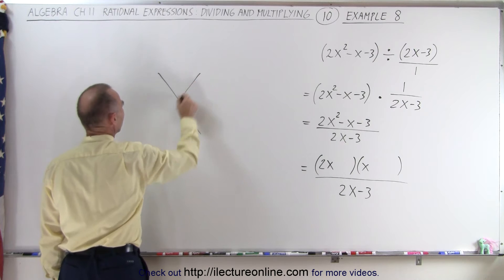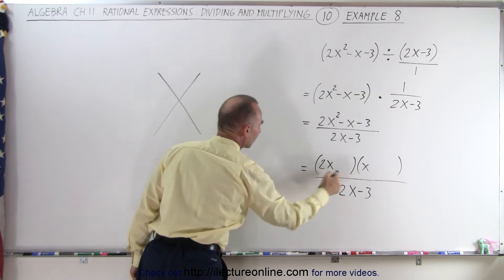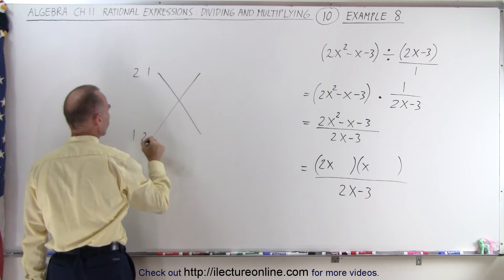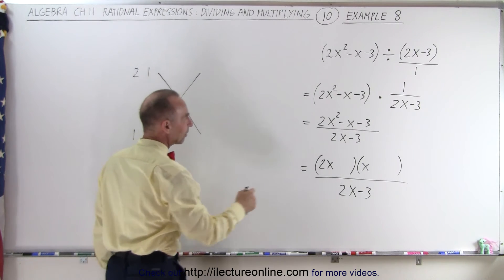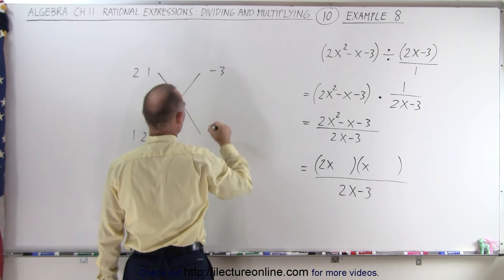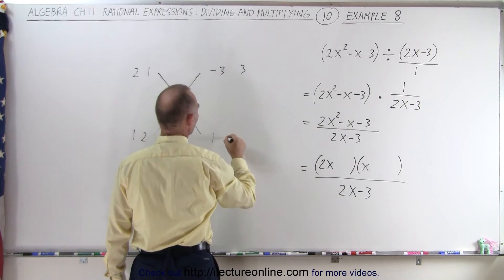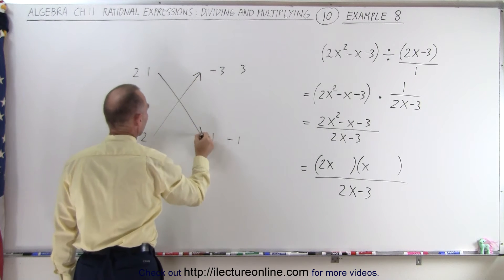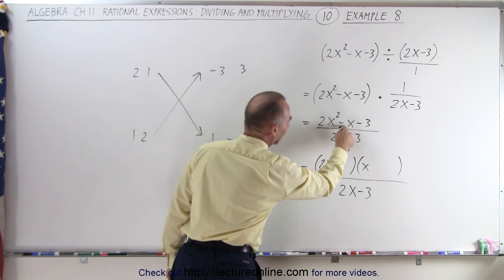So here's the FOIL method to get the first two components. Either there'll be a 2 and a 1 or a 1 and a 2. And then to get the last term here, we need a minus 3 and a 1 or a 3 or a minus 1. So now what we're going to do is we're going to FOIL. To get the middle term, we need a negative 1.